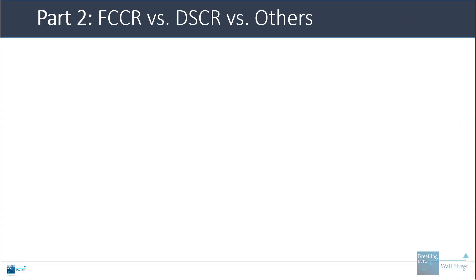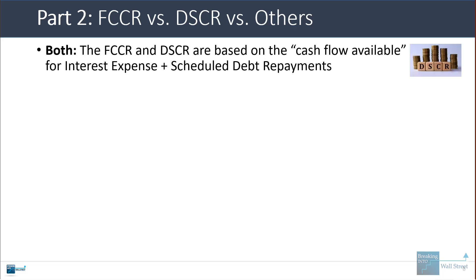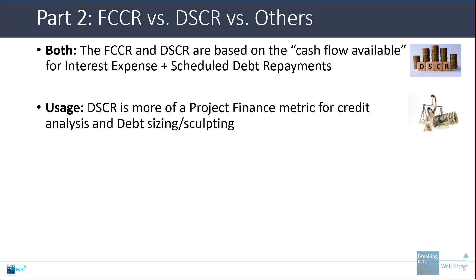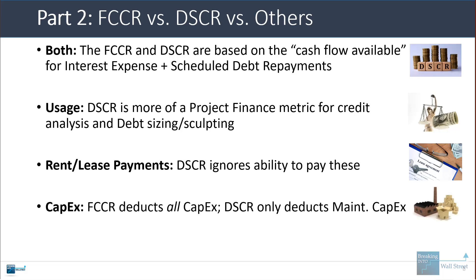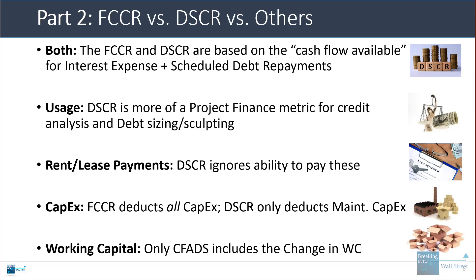Both the fixed charge coverage ratio and the debt service coverage ratio are based on cash flow available for interest expense plus scheduled debt repayments, but the DSCR is more of a project finance metric for credit analysis, debt sizing, and sculpting. The DSCR ignores an asset's ability to pay for rent and lease payments in its denominator. The FCCR deducts all or most CAPEX; the DSCR only deducts maintenance CAPEX. The change in working capital is included in cash flow available for debt service in the DSCR but typically not in the FCCR.